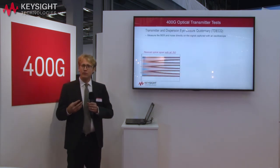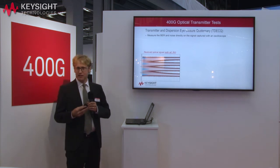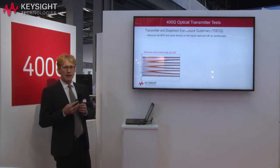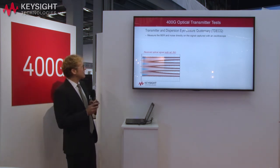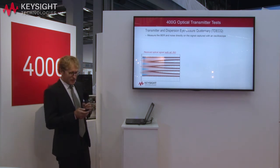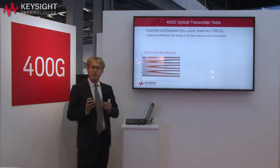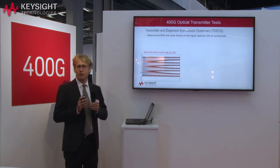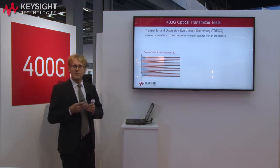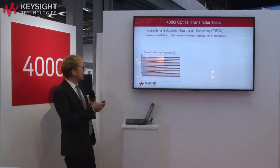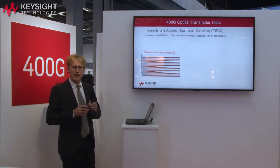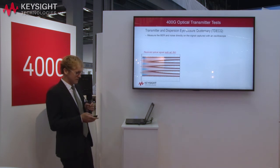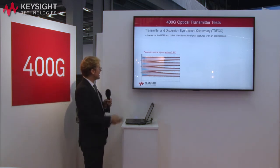So what is TDQ? To better understand this metric, consider an optical signal captured at the output of your optical transmitter using a sampling scope. It's important to note that the sampling scope is assumed to behave like a reference receiver, which means it has a specific analog bandwidth and includes an equalizer, as we will see in the following slides.